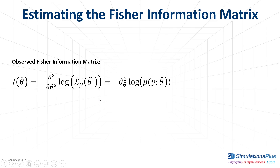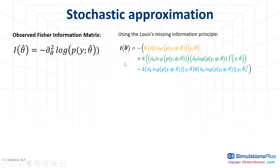In the next slide, I will use a more compact notation for the observed Fisher information matrix, where the observed likelihood is detailed as the probability distribution function of the observed data given the population parameter estimate. Using the Louis missing information principle, the Fisher information matrix can be decomposed as a combination of conditional expectations based on the first and second derivatives of the log likelihood. I call them d, j, and delta. Each of these conditional expectations can be estimated by a Monte Carlo procedure.